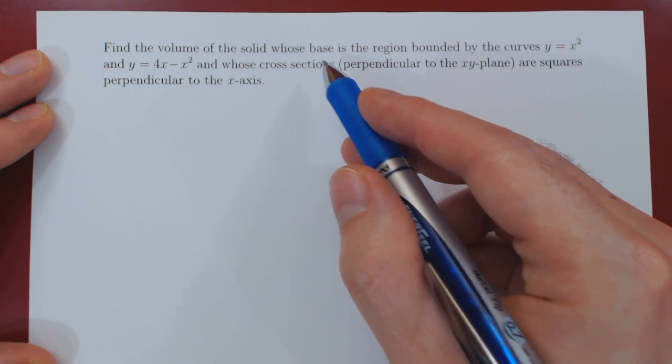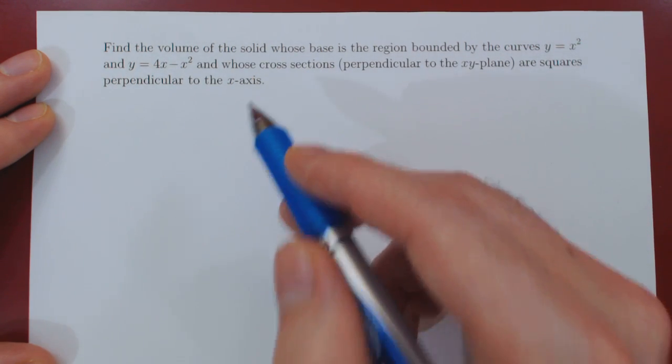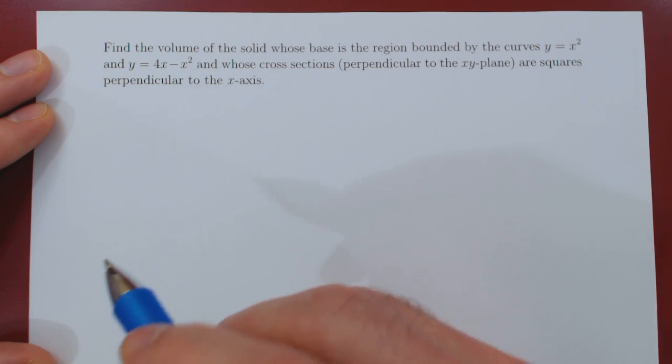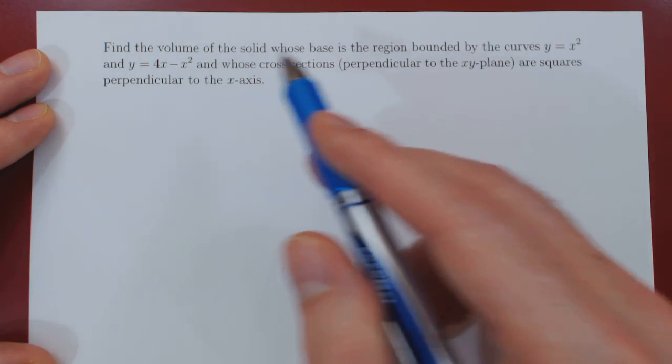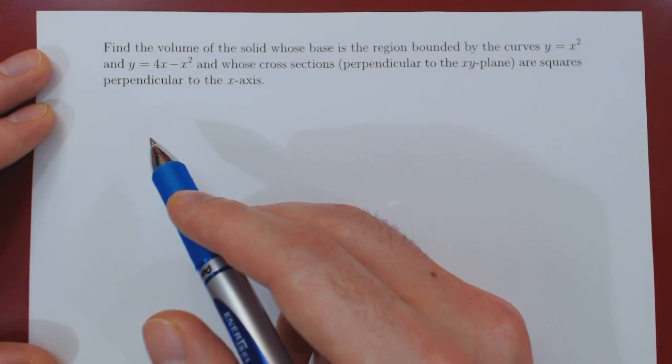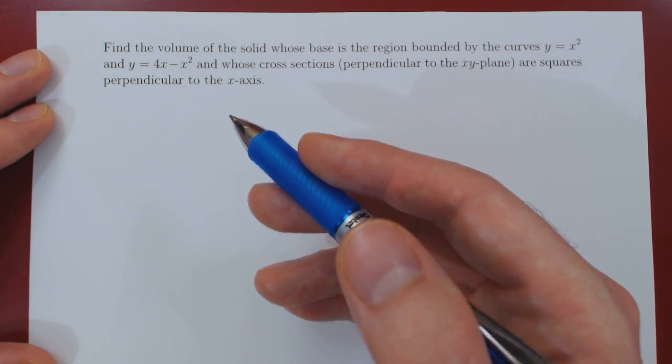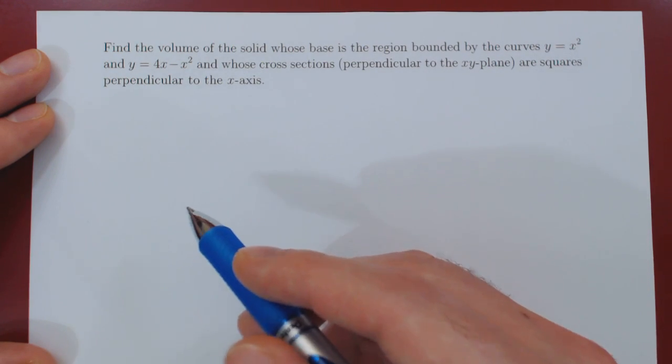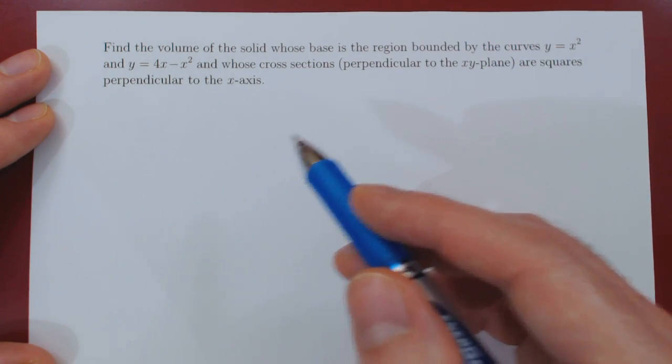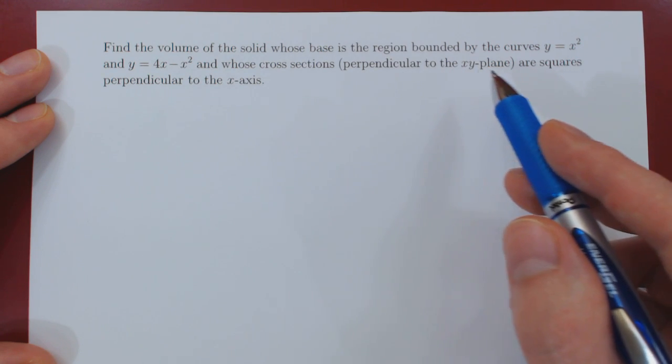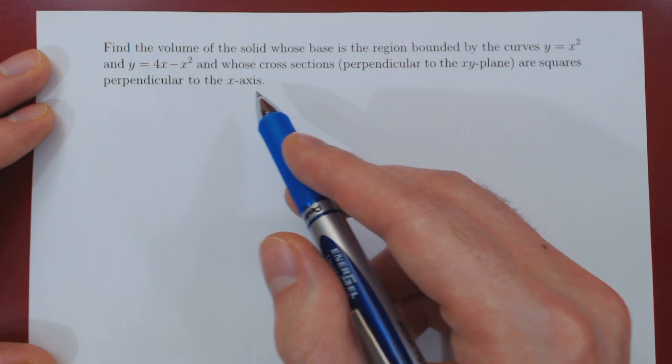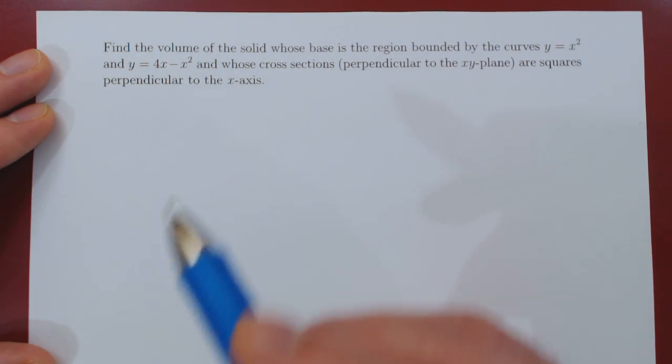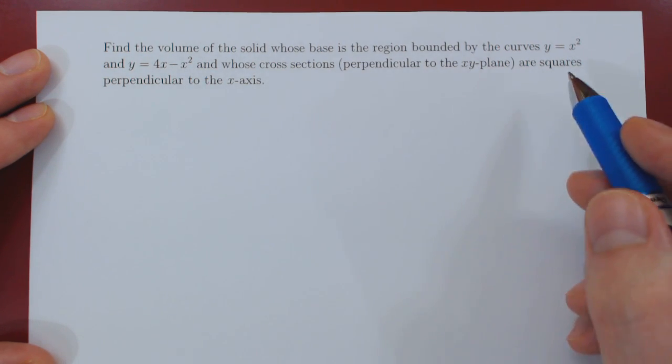Now, a cross section is a fancy way of saying a thin slice of the solid, or more precisely, an infinitesimal slice of the solid. So what we have here is a solid with a flat base, and imagine that this solid is made up of cheese, and you take a knife, and you cut in a way that's perpendicular to the xy plane, and also perpendicular to the x-axis, you cut a very thin slice of the solid, the result will be a very thin square.